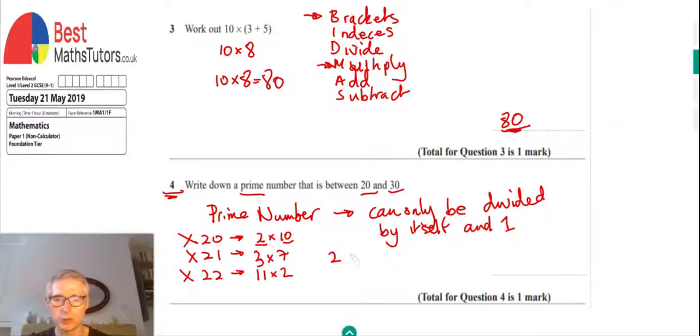We can't think of any numbers that will divide into that apart from itself. 23 times 1 will give us 23. So there's no other ones other than itself, 23, and 1 that can divide into 23. So that one is a prime number. So we can say 23 for our answer there.